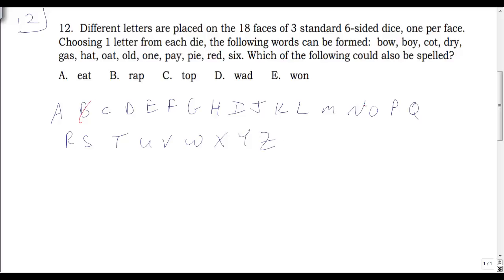Going through the words: BOW gives B, O, W. BOY gives B, O, Y. COT gives C, O, T. DRY gives D, R, Y. GAS gives G, A, S. HAT gives H, A, T. OAT gives O, A, T. OLD gives O, L, D. PAY gives P, A, Y. PIE gives P, I, E. RED gives R, E, D. SIX gives S, I, X. Counting uncrossed letters: 26 minus 8 is 18, so each letter only shows up once.